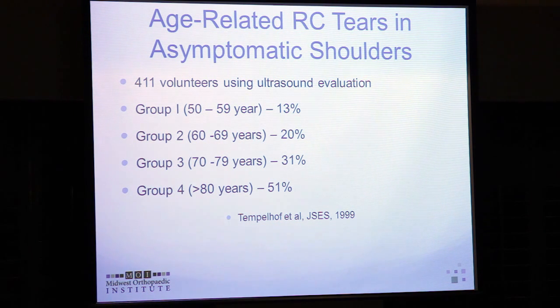A 1999 ultrasound study of 411 asymptomatic volunteers showed that in one's 50s, there is a 13% chance of having a rotator cuff tear — one in eight people. By one's 80s, it becomes a 50-50 chance. This tells us that intrinsic changes in the rotator cuff can cause tearing regardless of trauma, and many of these are asymptomatic individuals.